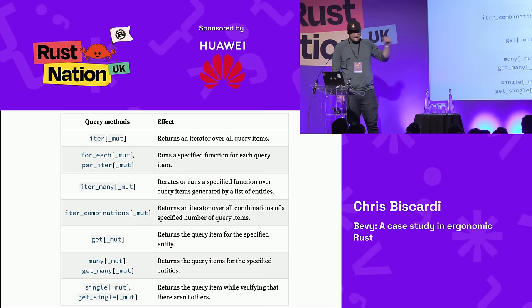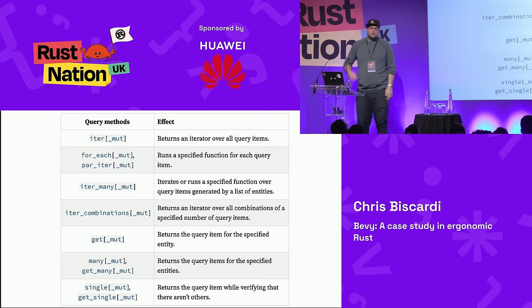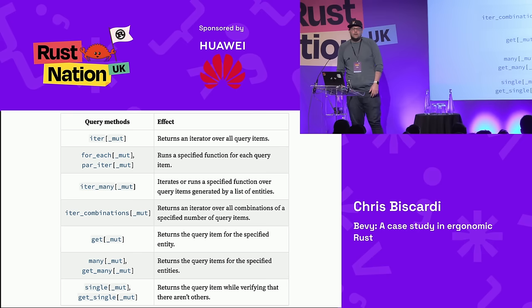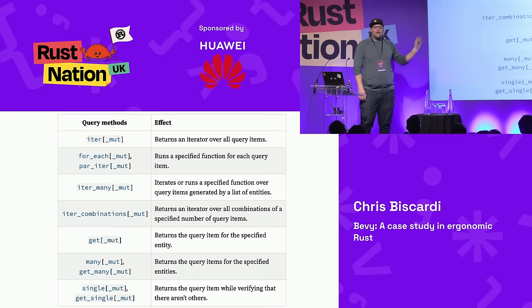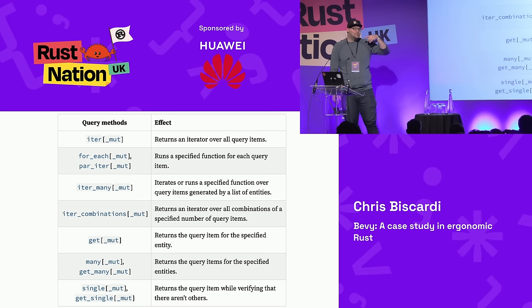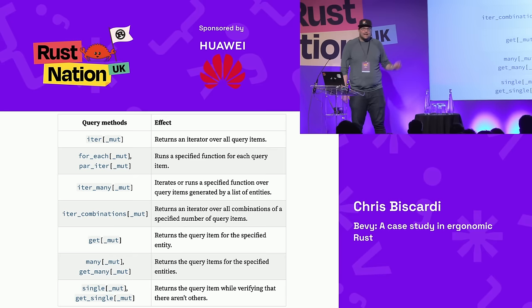Queries are kind of like databases — we can iterate, iterate in parallel, iterate in combination. The most important method here is `get`. When you query for entities or combinations of components, you get what is effectively a key-value store. If you stored an entity in a resource — say, this is the player's ship — you can do the query for all transforms and then `query.get(entity_id)` to get just the transform for that specific player.